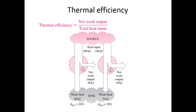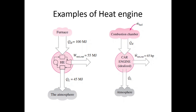When two heat engines are connected to a single source and sink: the first engine rejects 80 kilojoules of heat, meaning only 20 kilojoules is useful work; the second engine rejects 70 kilojoules, meaning 30 kilojoules is useful work. Using the thermal efficiency formula — net work output divided by total heat input — the first heat engine has 20% thermal efficiency and the second has 30% thermal efficiency.